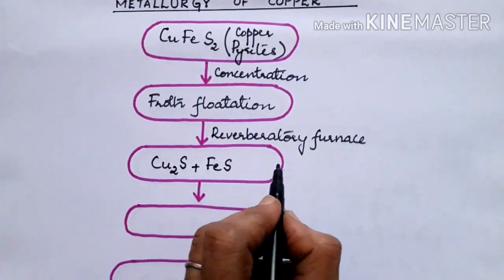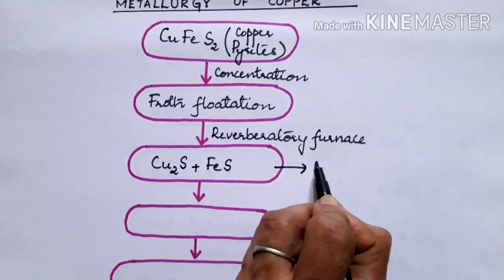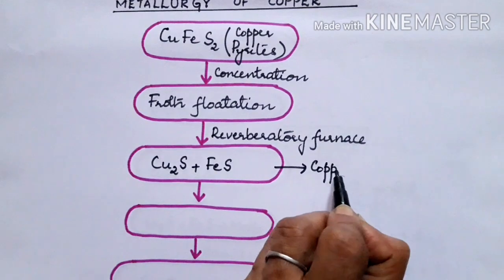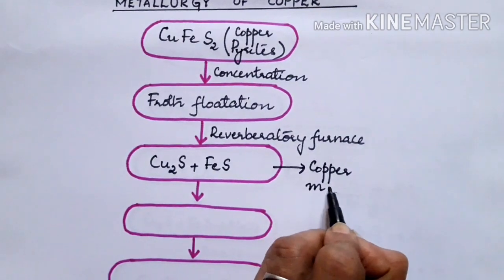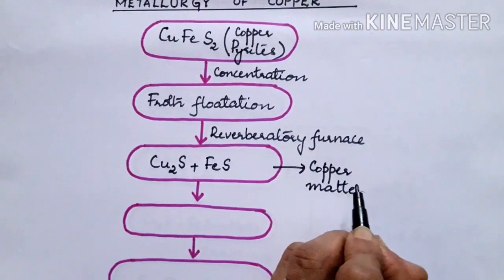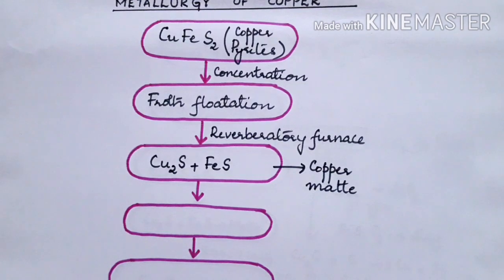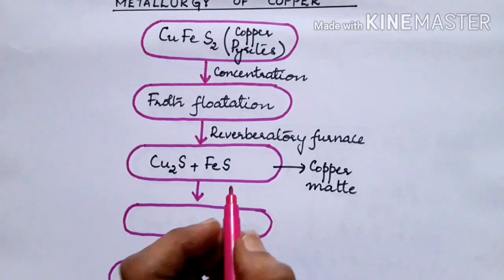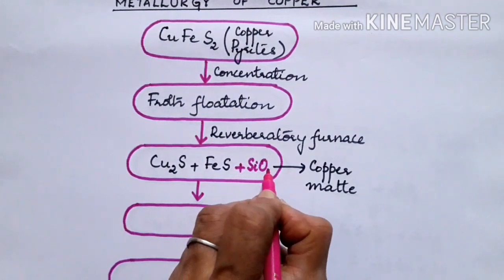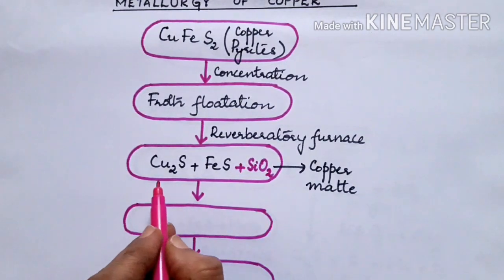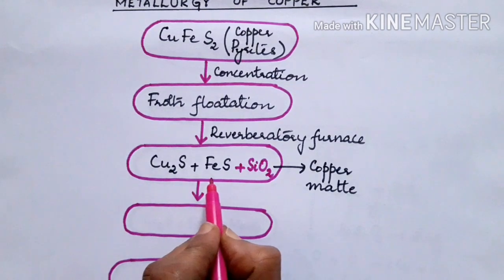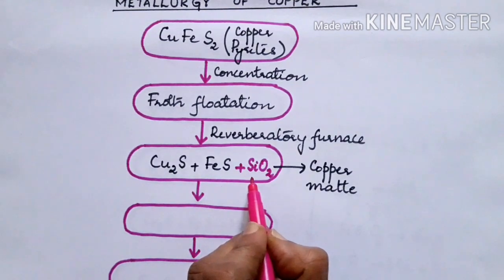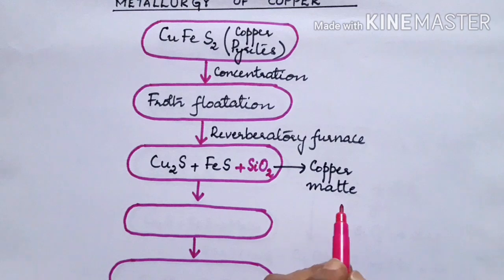This mixture, we call it as copper matte. Along with this, we are mixing it with some amount of silica. So the mixture of copper sulphide, iron sulphide, and silica together form copper matte.